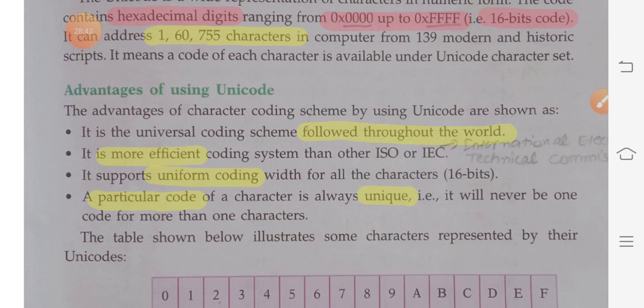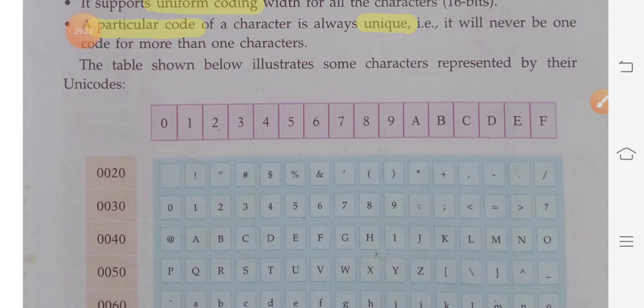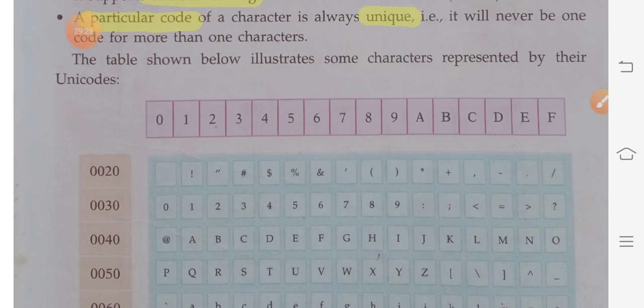To summarize today's session: character set is the set of characters supported by Java — letters, digits, operators, and delimiters. Unicode stands for universal code and is a 16-bit encoding scheme. ASCII stands for American Standard Code for Information Interchange and is a 7-bit encoding scheme. In the next video, we will start the topic of escape sequences. Thank you and have a good day.